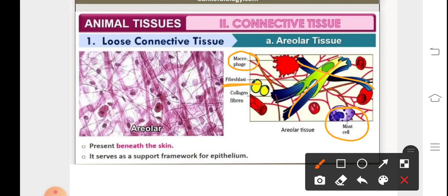And it consists of three types of cells: the fibroblast cells, the macrophages, and the mast cells.